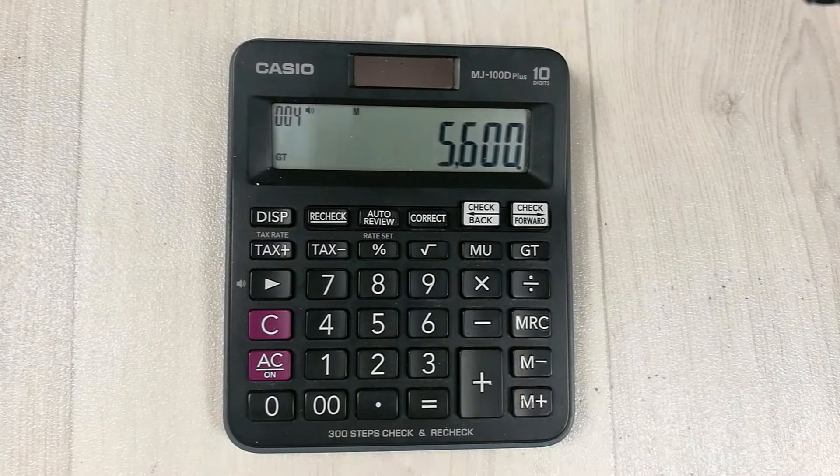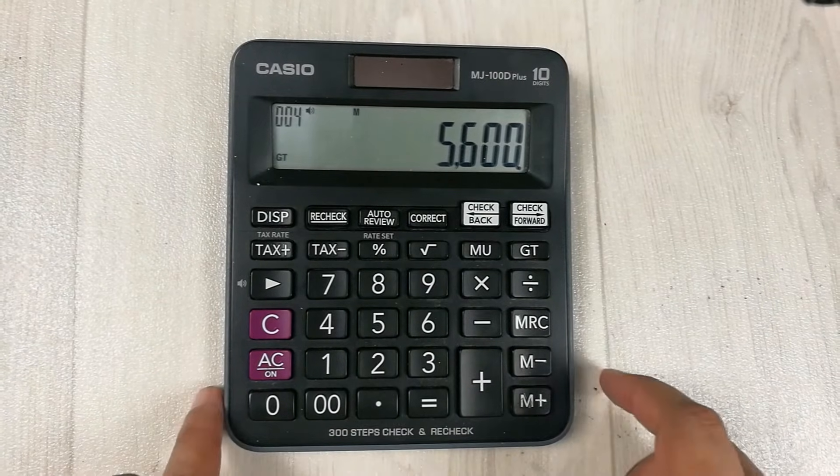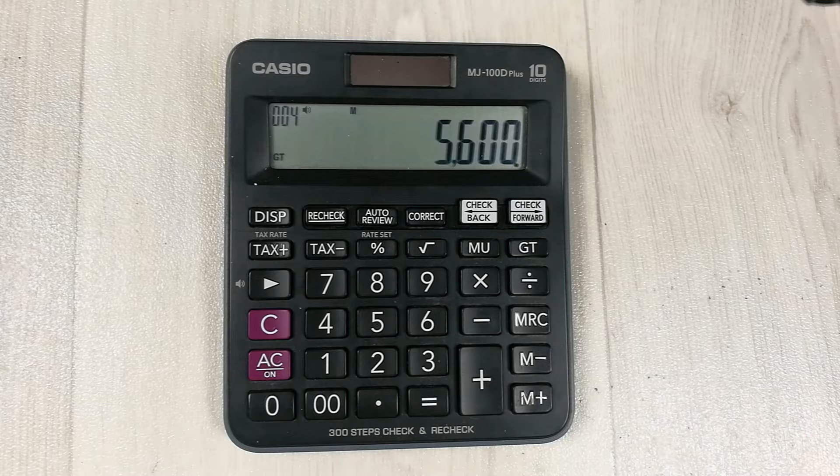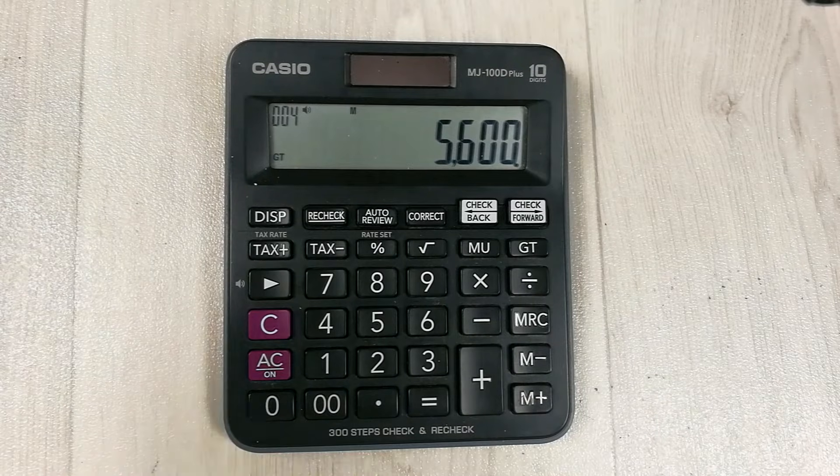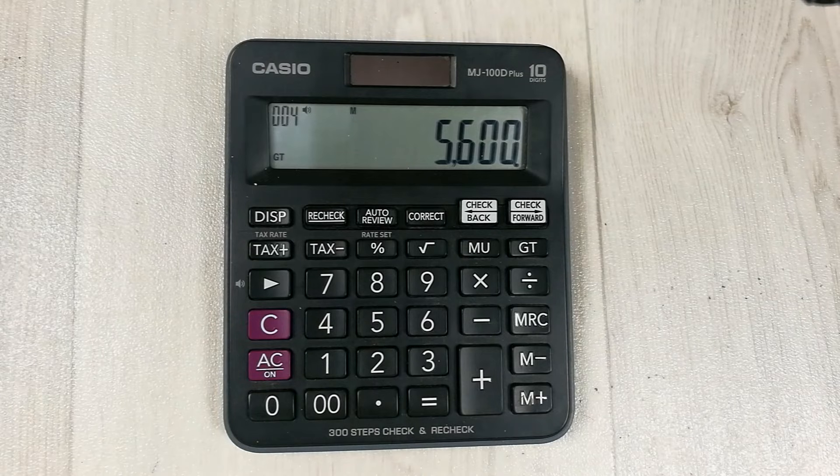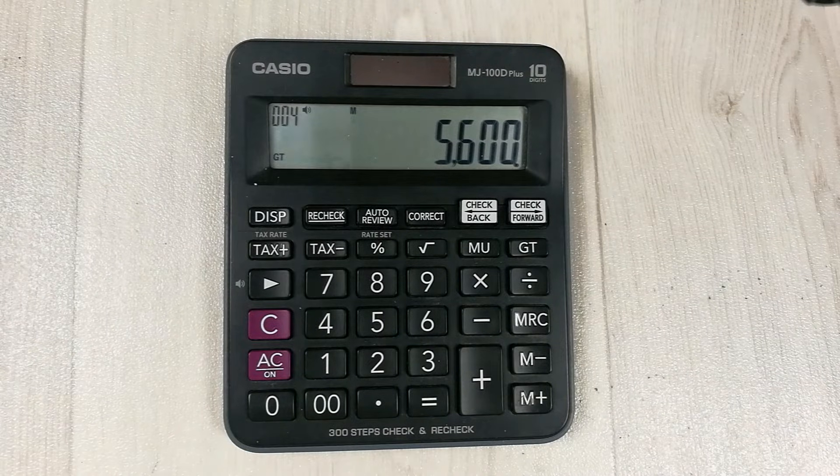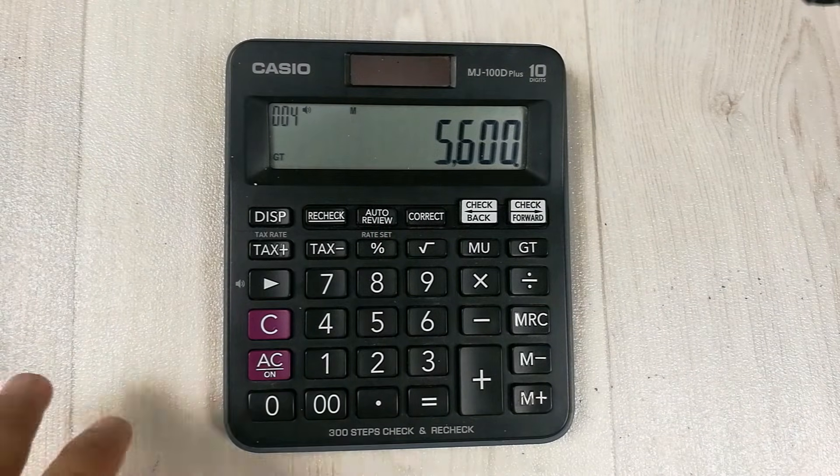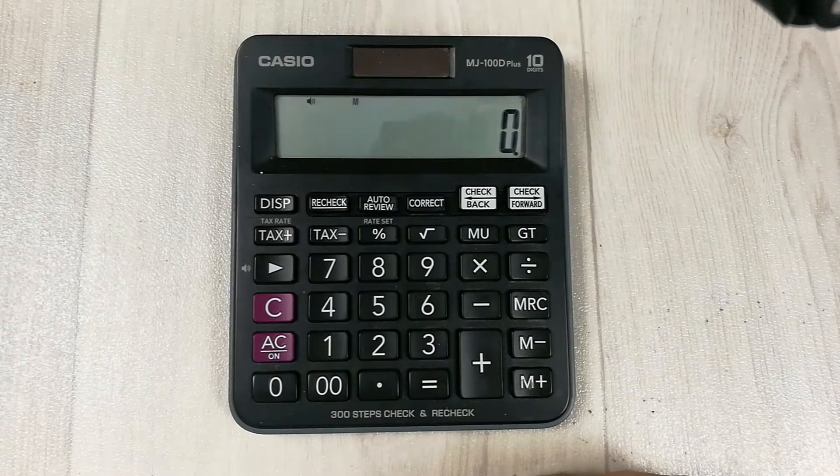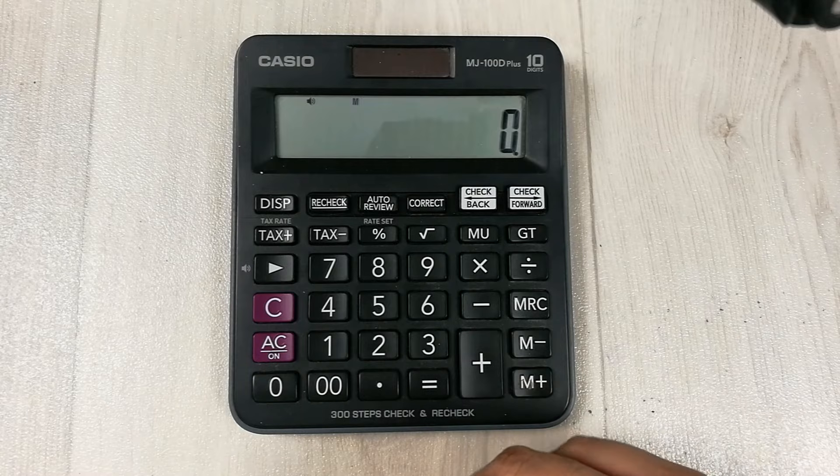Here is the final answer. So 5600 is the 20% off price from 7000. This is how you can calculate 20% of a price on a calculator. Let's move to another example.